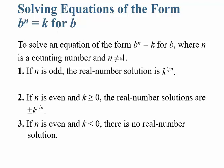So it'll be like 2, 3, 4, 5, and so on. If n is an odd number, like 5, 7, 9, the real number solution is you take k and raise it to the 1 divided by n power. If n is even, like 2, 4, 6, 8, and k is greater than 0, then the real number solution gives you two values: plus or minus k to the 1 over n power. And if n is even but k is a negative number, well, there are no real number solutions.